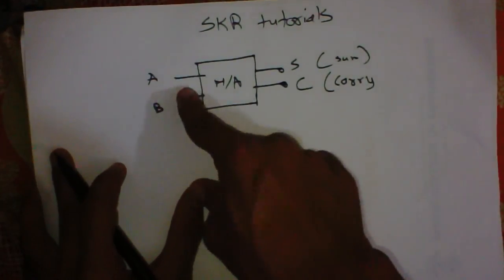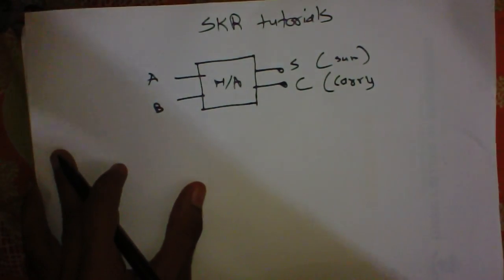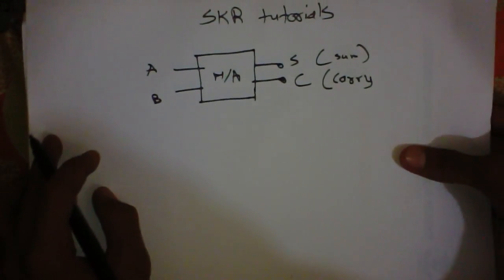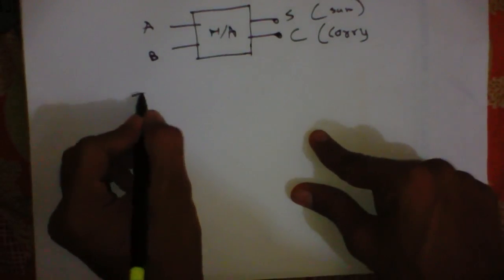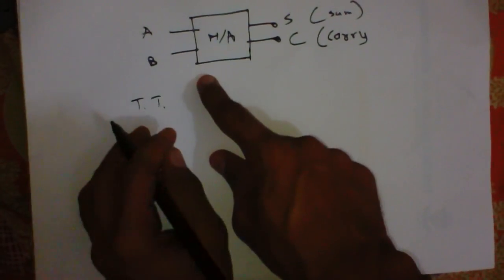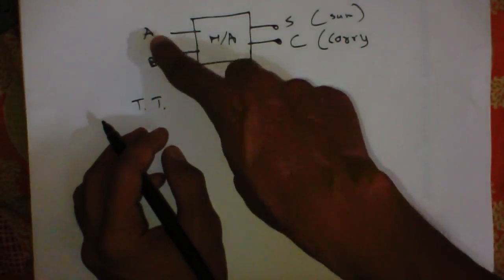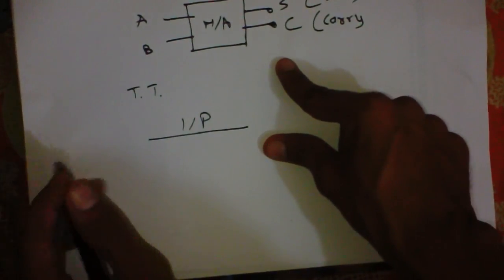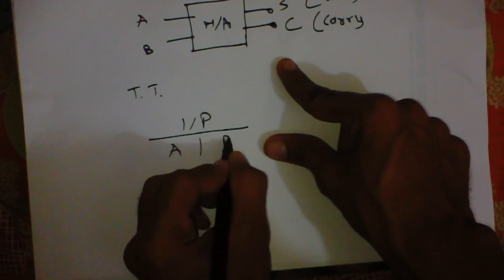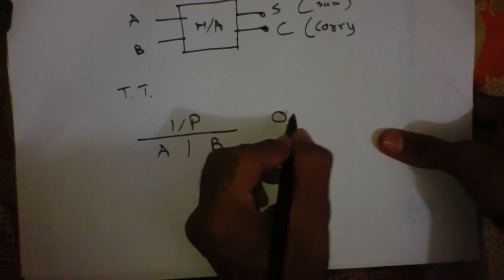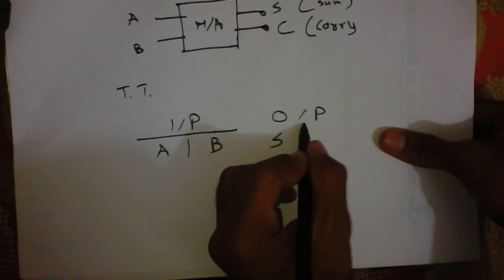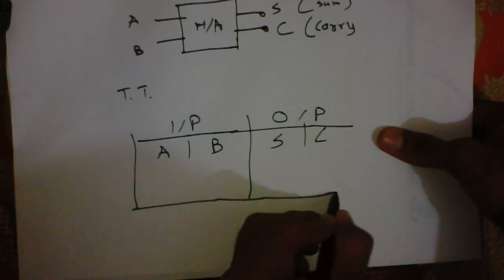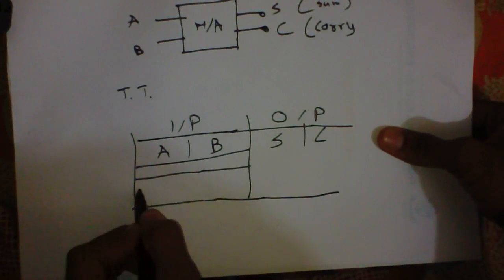This is the basic block diagram of the half adder. Now I draw the truth table of the half adder. We can draw from this basic diagram. It has two inputs: A and B, and outputs: sum and carry. Two inputs means we will have four rows.